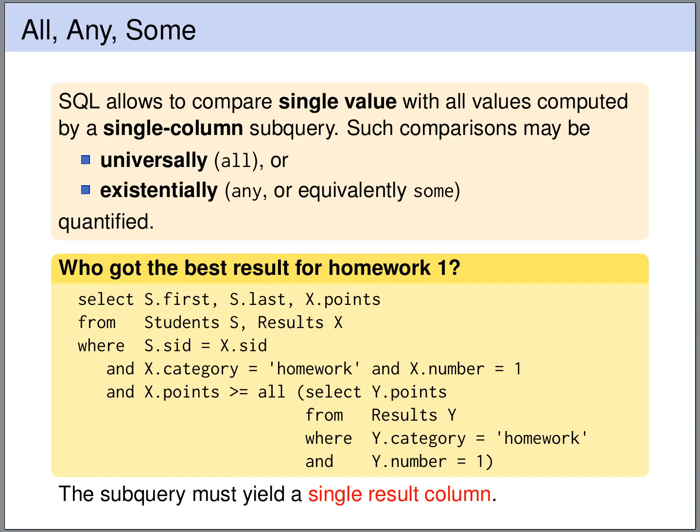So let's have a look at what this query concludes. The inner query queries the results table. It looks only at homework1 results. And of each of them, it outputs the points. So we will get a single column with all the points obtained for homework1.